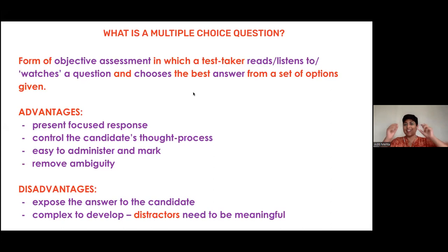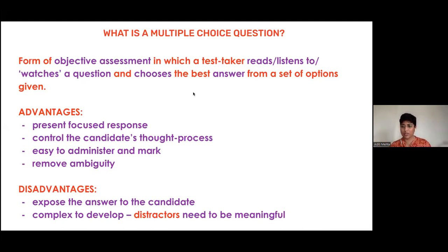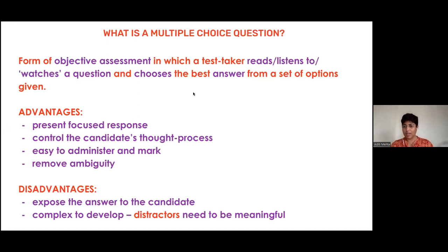When we are creating MCQs, the first thing we do is write the instruction on top — 'Choose the correct answer from the following options.' Especially for older children, 'choose the best answer from a set of options' could be a better instruction rather than 'choose the right answer from the correct options.'